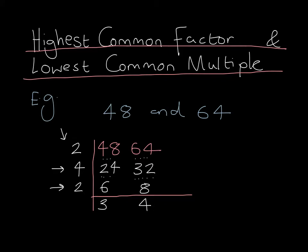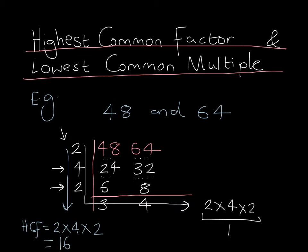Now, to find the highest common factor, we simply multiply any numbers in this column together. So the highest common factor of 48 and 64 is 2 multiplied by 4 multiplied by 2, which has a product of 16. To find the lowest common multiple, we multiply these three numbers by these numbers along here. So we have to do 2 multiplied by 4 multiplied by 2, which we already know is 16, multiplied by 3 multiplied by 4, which is 12. So the lowest common multiple is 16 multiplied by 12, which is equal to 192.